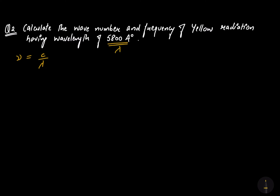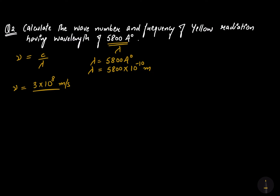The wavelength is given as 5800 angstroms. Converting to meters: 5800 × 10⁻¹⁰ meters. Using nu = C / lambda, with C = 3 × 10⁸ meters per second divided by 5800 × 10⁻¹⁰ meters, the frequency comes out to be 5.2 × 10¹⁴ per second.